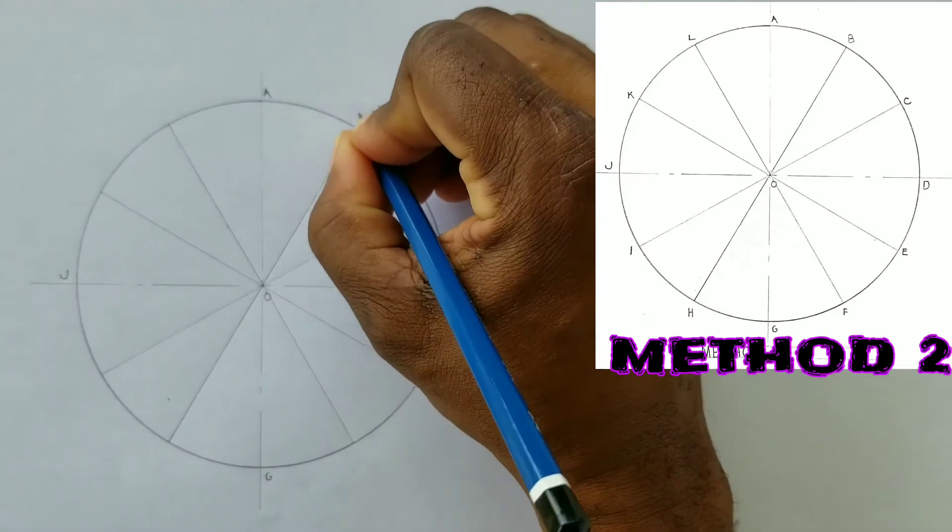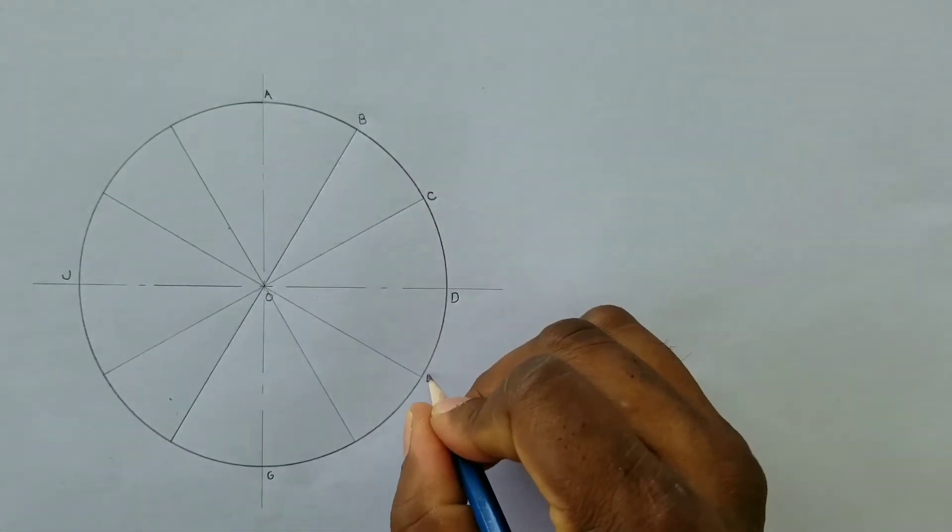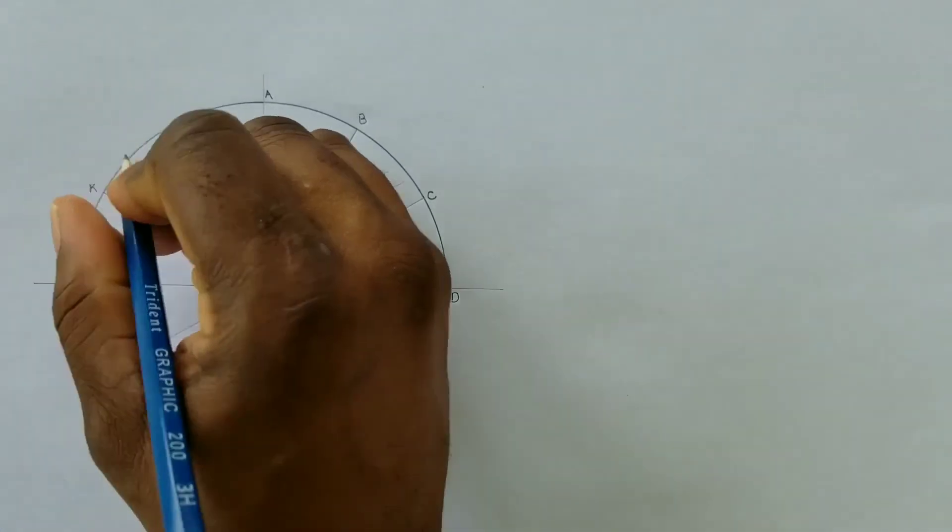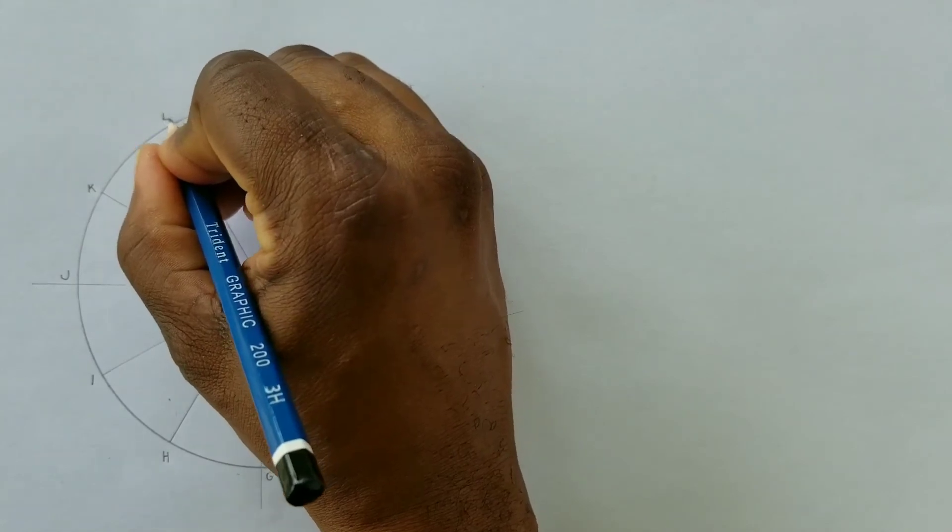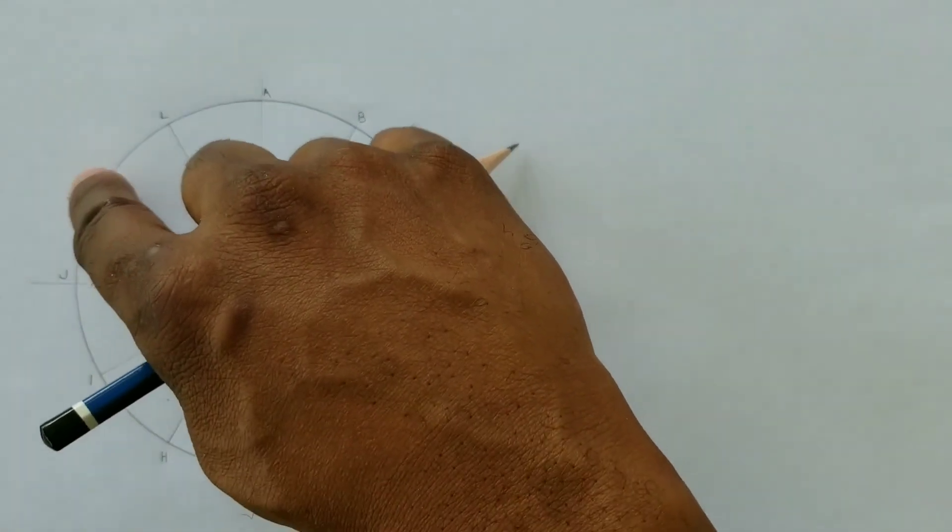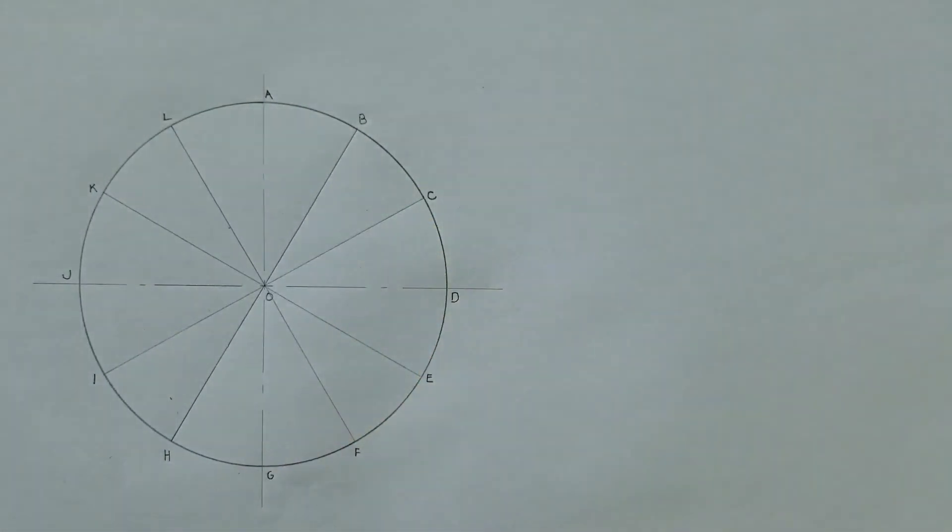We will now label points B, C, E, F, H, I, K, L. Now we have just divided our circle into 12 equal divisions using our 60-30 set square.